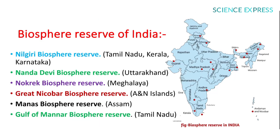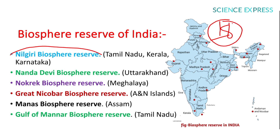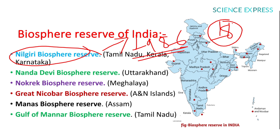In India, 18 biosphere reserves are present. The Nilgiri Biosphere Reserve is the first, established in 1986, located across Tamil Nadu, Kerala, and Karnataka. Others include Nandadevi in Uttarakhand, Nokrek in Meghalaya, Great Nicobar in Andaman and Nicobar Islands, Manas in Assam, and Gulf of Mannar in Tamil Nadu.